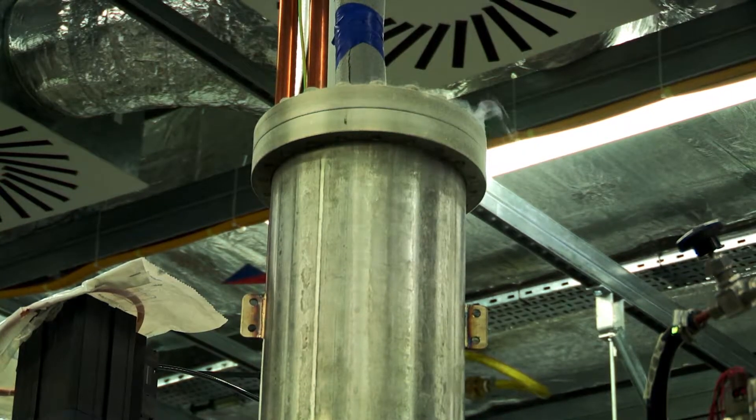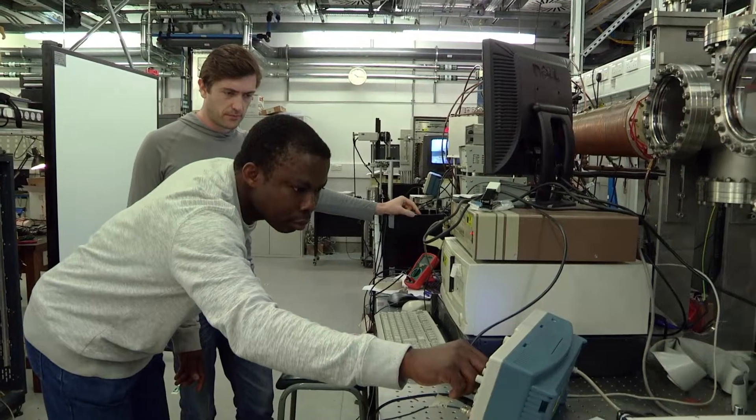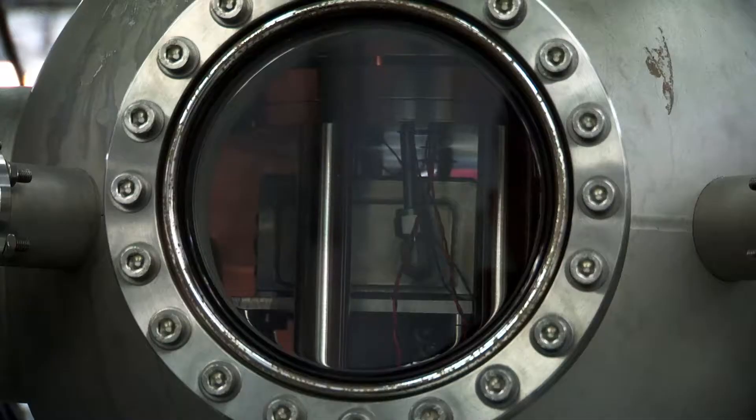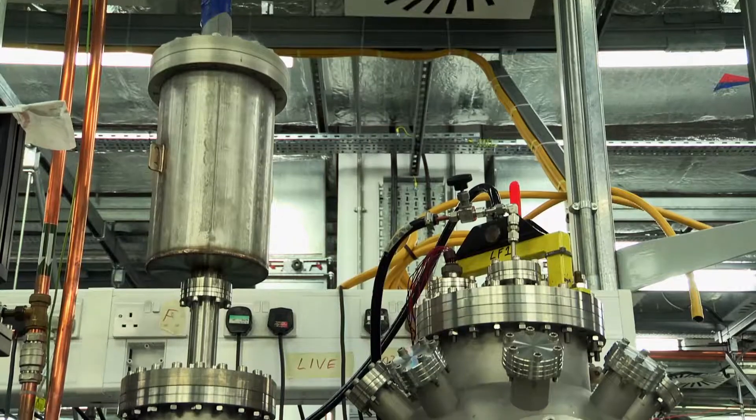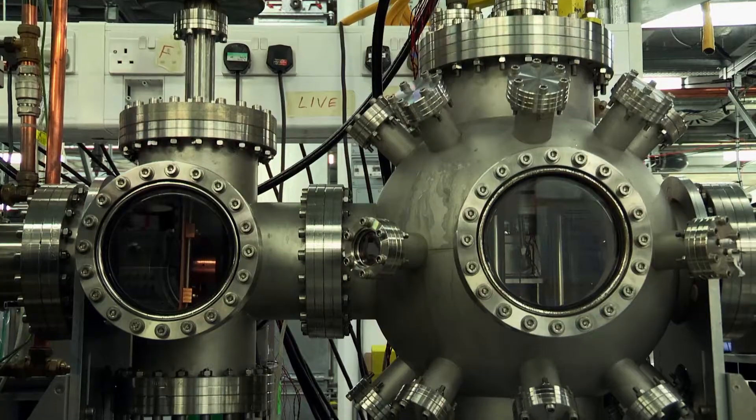Inside that dewar is liquid nitrogen so that as the liquid nitrogen boils off it makes that copper plate very cold so any of the vapor that doesn't go through in a nice beam sticks to the plate and keeps the vacuum in there very good.